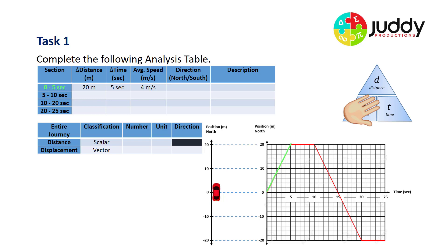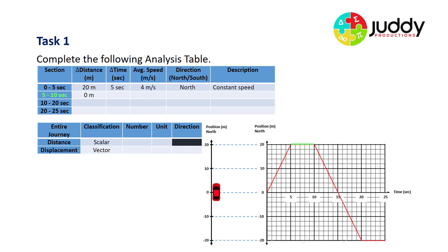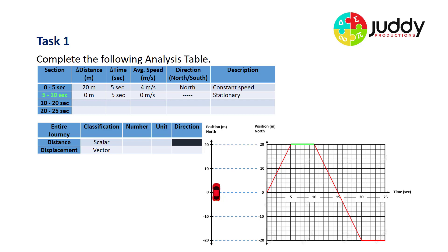The vehicle in the first five seconds is heading in the northerly direction — upwards on the graph — at a constant speed, meaning the gradient has a constant value. From five to ten seconds, the flat section at the top: we've started at 20 meters and we're still there after 10 seconds, so zero distance traveled in five seconds. Zero divided by five gives a speed of zero — gradient of zero, flat — so the object is stationary.